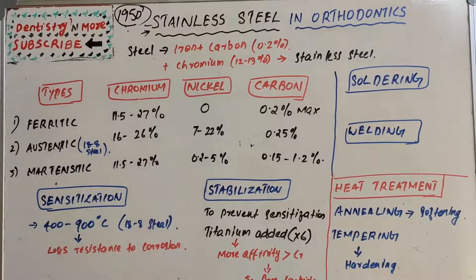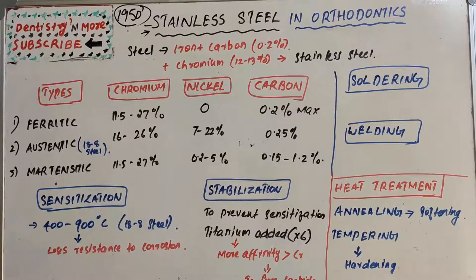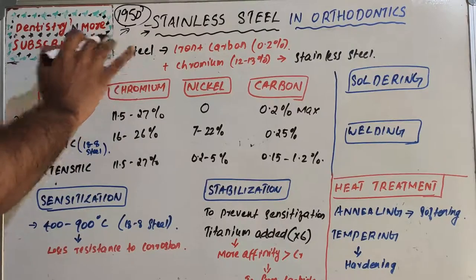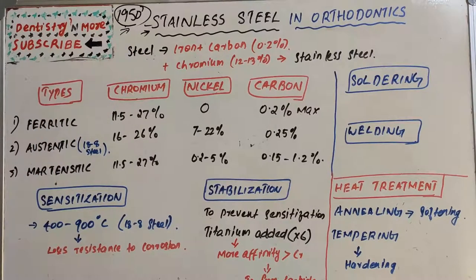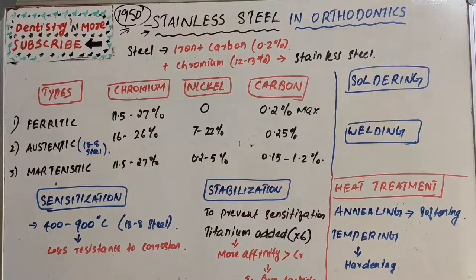Hello everyone, welcome back to another session in Dentistry and More. Today's topic in orthodontics is stainless steel — the most commonly used wires in orthodontics, introduced to the branch around the 1950s. Since then, it has remained in clinical use mainly because of its excellent formability, low cost, ability to resist corrosion, and ease of joining.